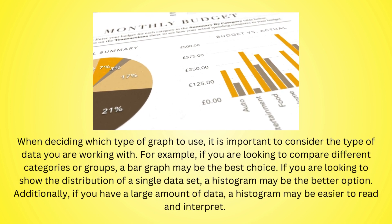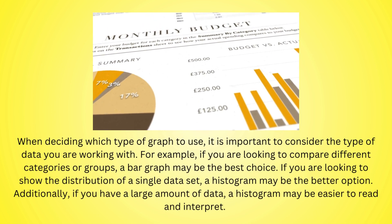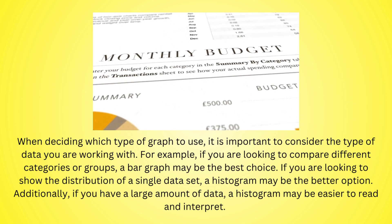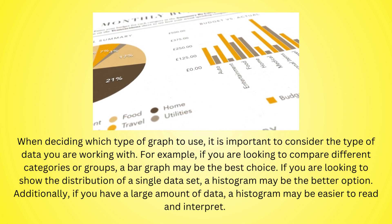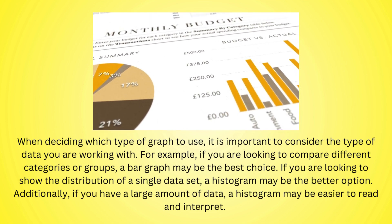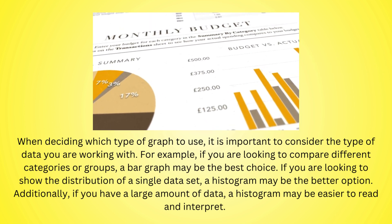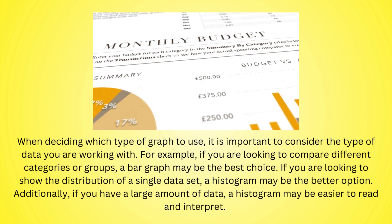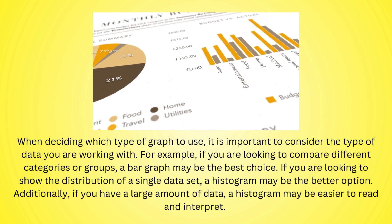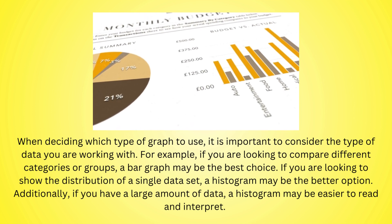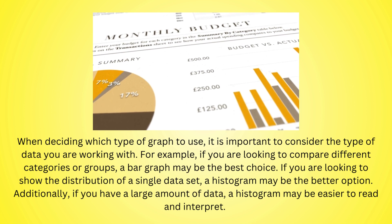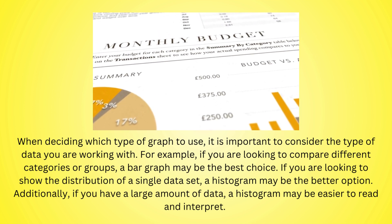When deciding which type of graph to use, it is important to consider the type of data you are working with. For example, if you are looking to compare different categories or groups, a bar graph may be the best choice. If you are looking to show the distribution of a single data set, a histogram may be the better option. Additionally, if you have a large amount of data, a histogram may be easier to read and interpret.